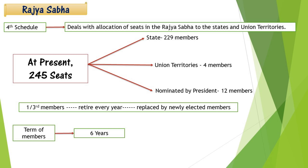Now let's discuss Rajya Sabha. The Fourth Schedule deals with the allocation of seats in Rajya Sabha to the states and union territories. Rajya Sabha has 245 seats — states have 229 seats, Union Territories have 4, and 12 members are nominated by the President. One-third of members retire every year and are replaced by newly elected members. The term of Rajya Sabha is six years.